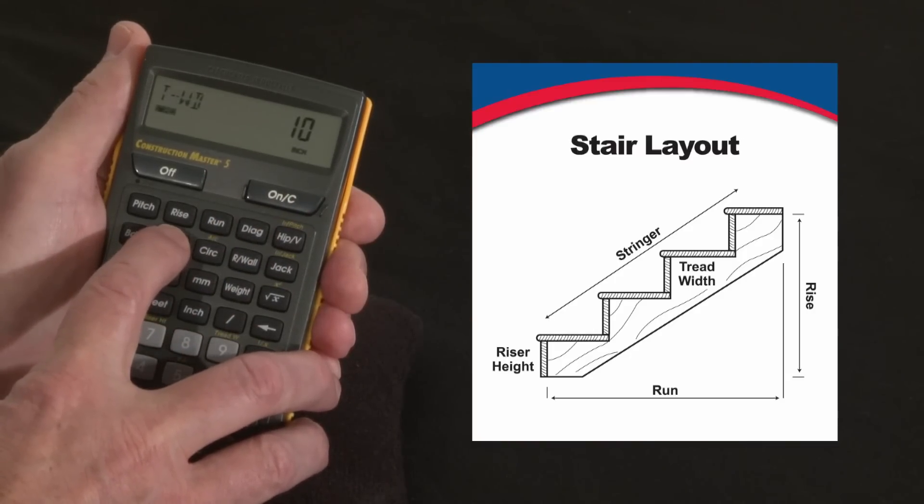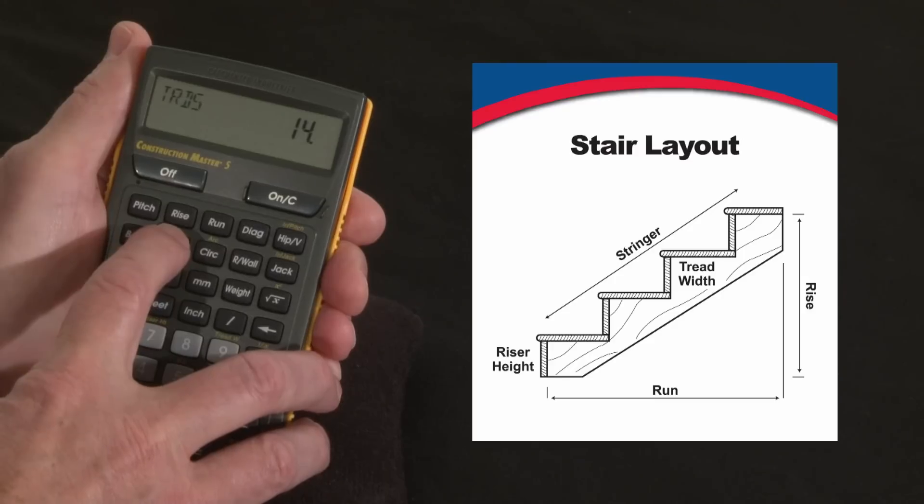Tread width is ten inches. That's sort of the default tread width. There's going to be fourteen treads. There is no remainder on that. It divides evenly.